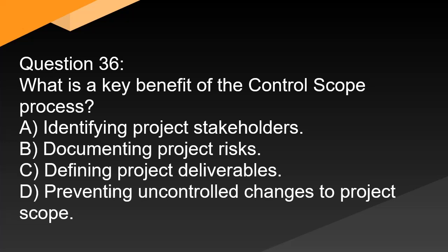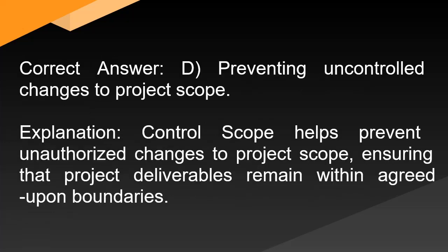Question 36: What is a key benefit of the control scope process? A. Identifying project stakeholders. B. Documenting project risks. C. Defining project deliverables. D. Preventing uncontrolled changes to project scope. Correct answer: D. Preventing uncontrolled changes to project scope. Explanation: Control scope helps prevent unauthorized changes to project scope, ensuring that project deliverables remain within agreed-upon boundaries.